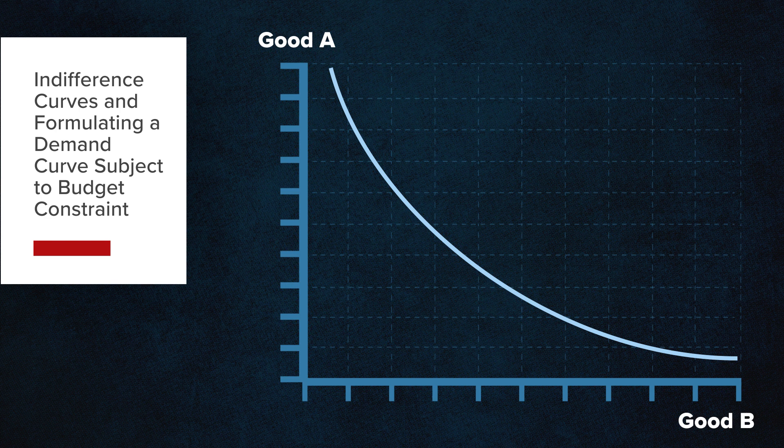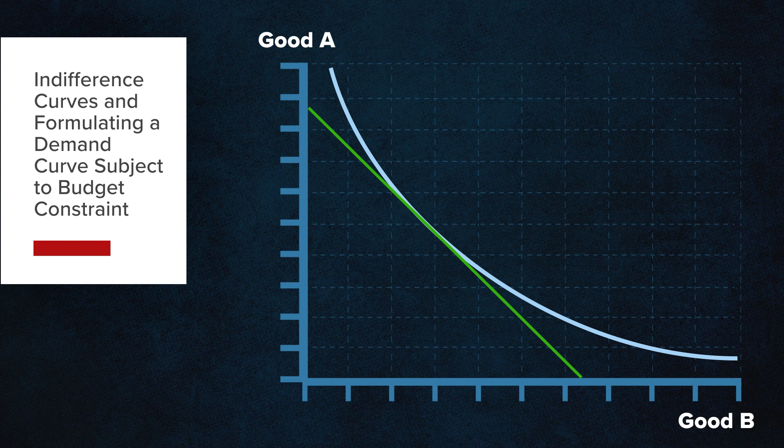The consumer's ability to purchase any combination of the two goods A and B is constrained by a finite budget. We can express the budget constraint by inserting a line that illustrates possible combinations of goods A and B, starting at all good A, declining to all good B.